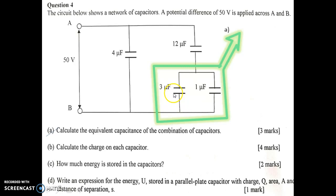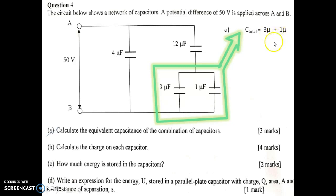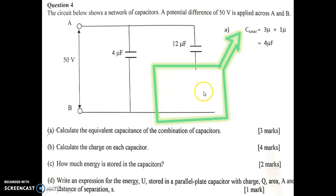The 3 µF and 1 µF capacitors are arranged in parallel. So the C total is 3 µF plus 1 µF, which gives us 4 µF. So the combination is 4 µF.